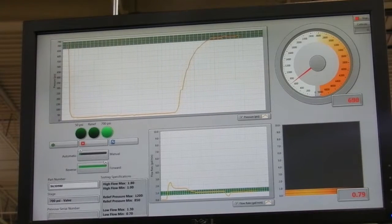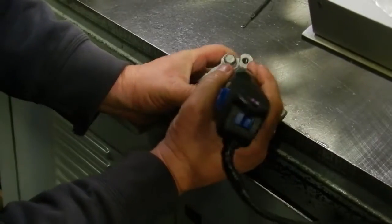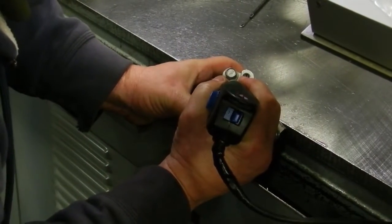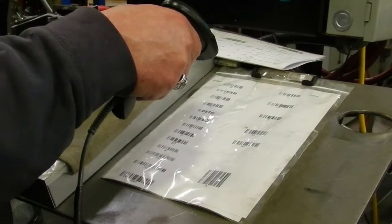Once the unit passes all tests, as determined by the computer, a serial number and the part number are engraved in the housing, with all the test results stored in a computer database for future reference.